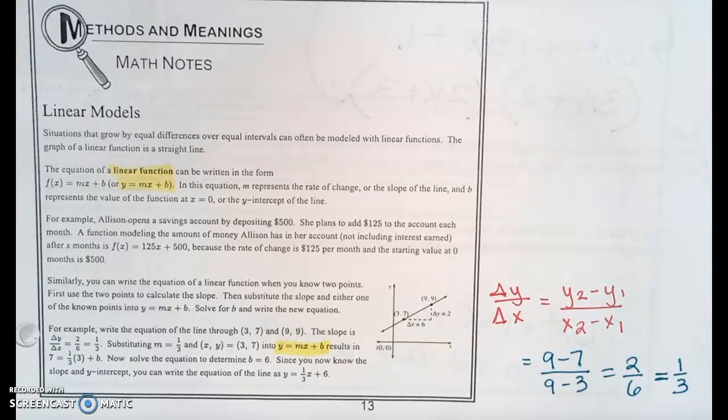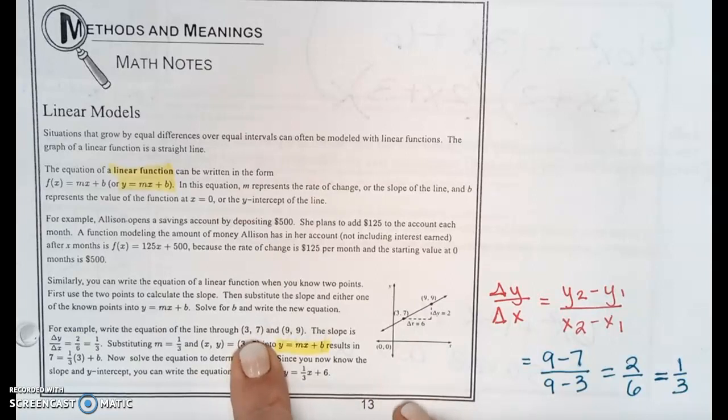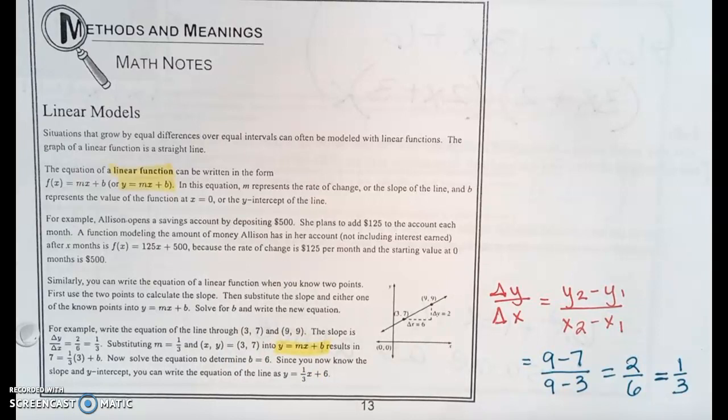Similarly, you can write the equation of a linear function when you know two points. First, use the two points to calculate the slope, then substitute the slope and either one of the known points into the equation y = mx + b, solve for b and write the new equation. For example, write the equation of the line through the two points (3,7) and (9,9). The slope is change in y, and they use this notation delta y over delta x, but you've probably more commonly seen it as (y₂ - y₁) / (x₂ - x₁). So you're going to take the y values and subtract them, and then you're going to take the x values and subtract them. Order is important. If you start with point 2 in the numerator, you have to start with point 2 in the denominator.